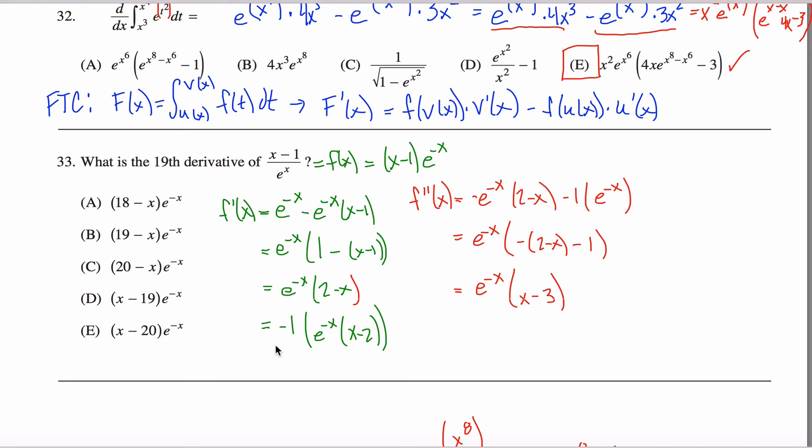So, first observation, it appears that the sign is changing each time, positive, negative, positive, and so forth. So, in any even power, I get a positive. So, I'm looking for the 19th derivative.